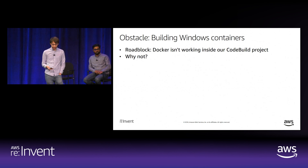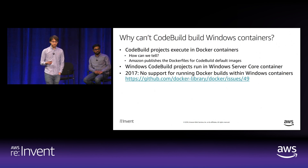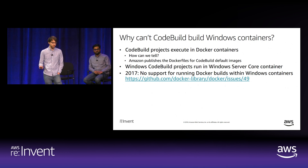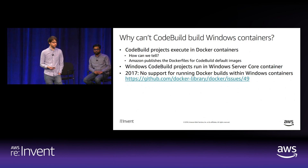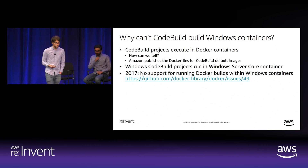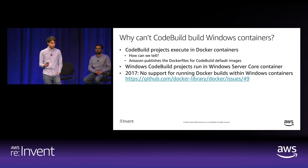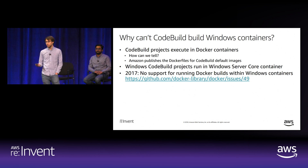Why didn't it work? Behind the scenes, CodeBuild creates new Docker containers for each build—Amazon publishes the Dockerfiles for CodeBuild's default images and you can also push your own images. CodeBuild Windows projects run on Windows Server Core containers. The state of the art in 2017 was that there is no support for running Docker builds from within a Windows container—supporting this would require changes both to Docker and to the Windows kernel, and it wasn't on anyone's roadmap.